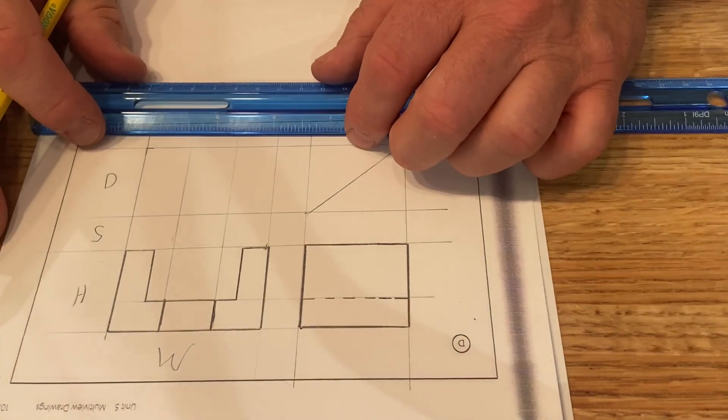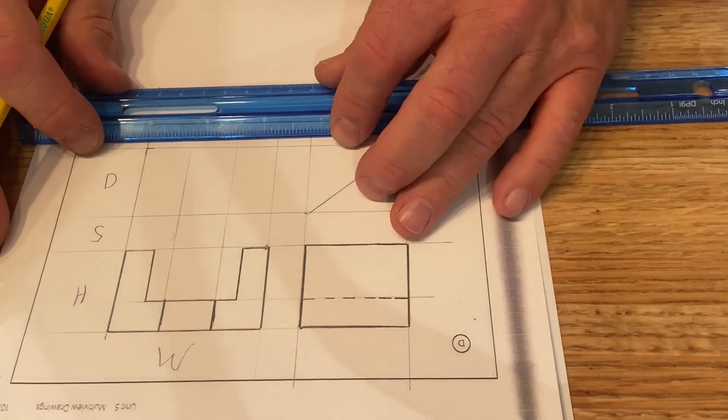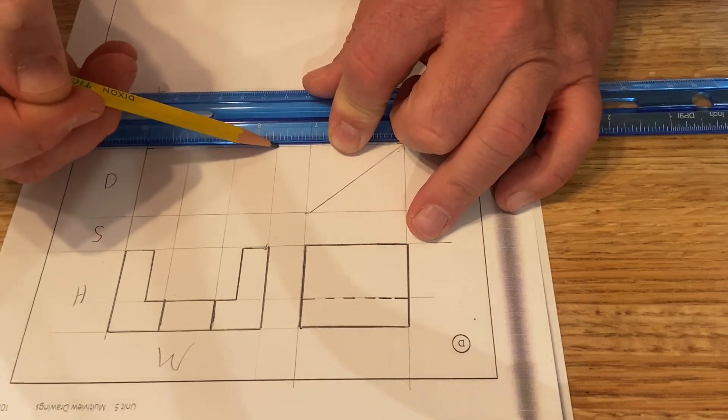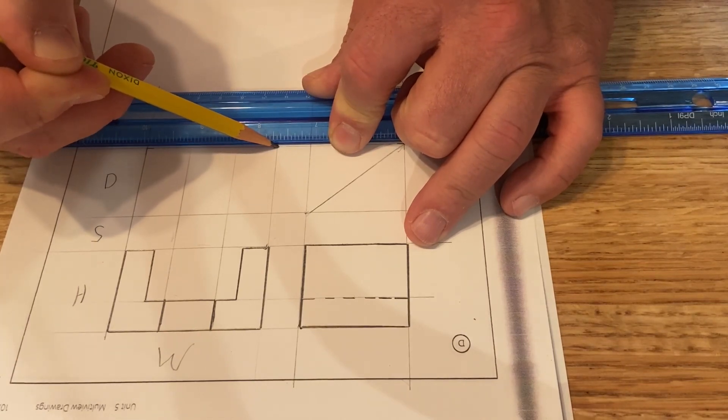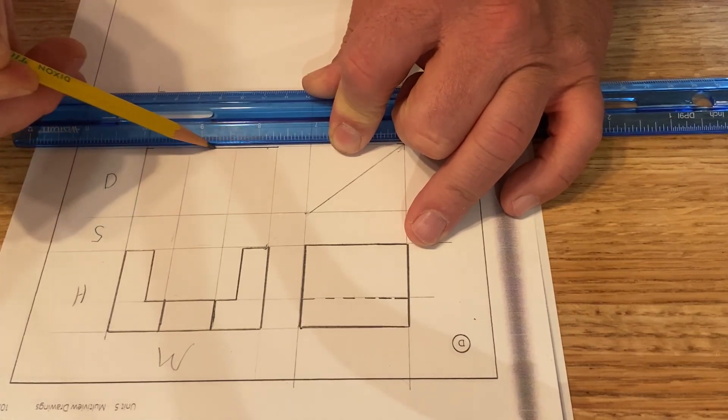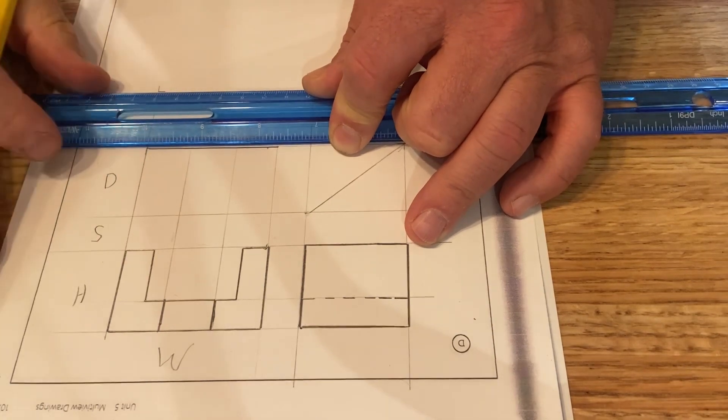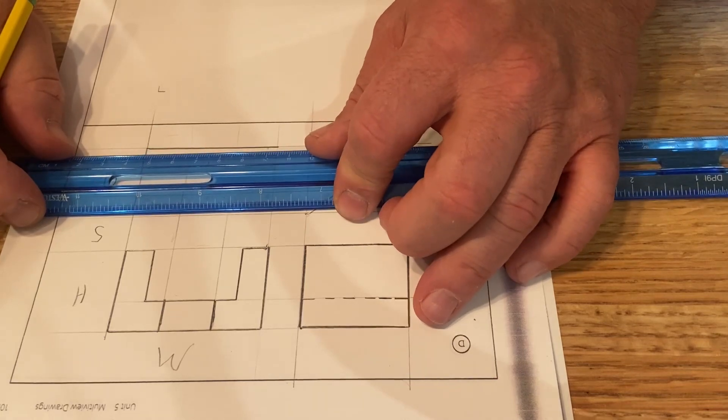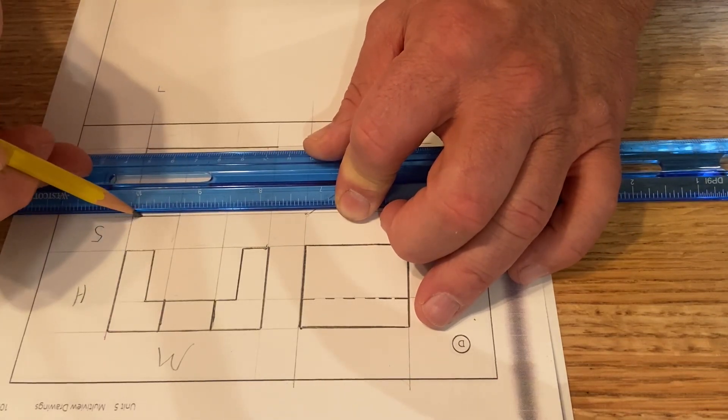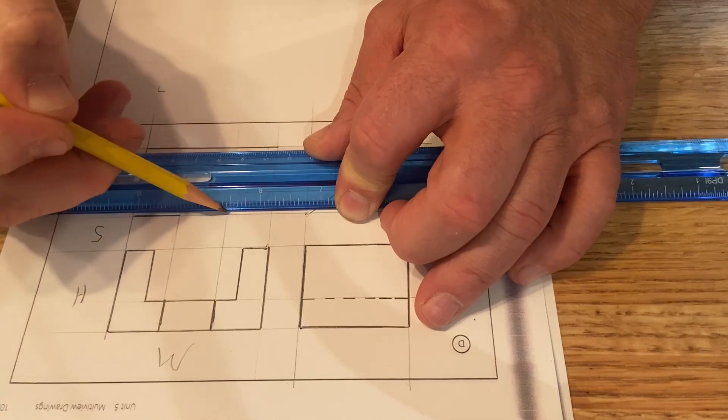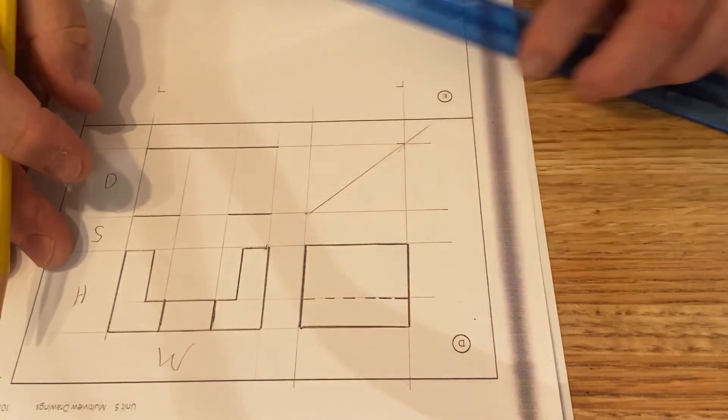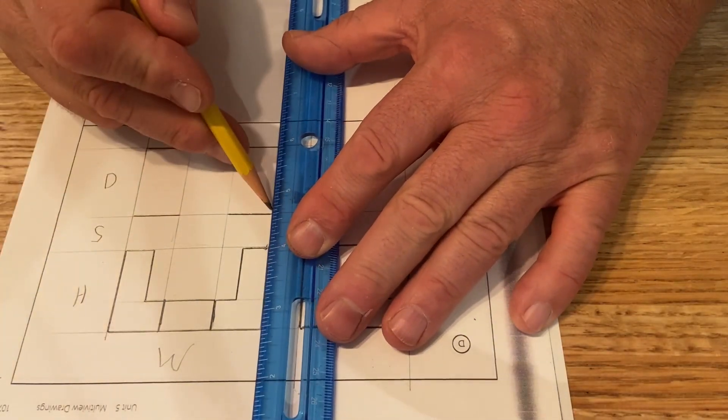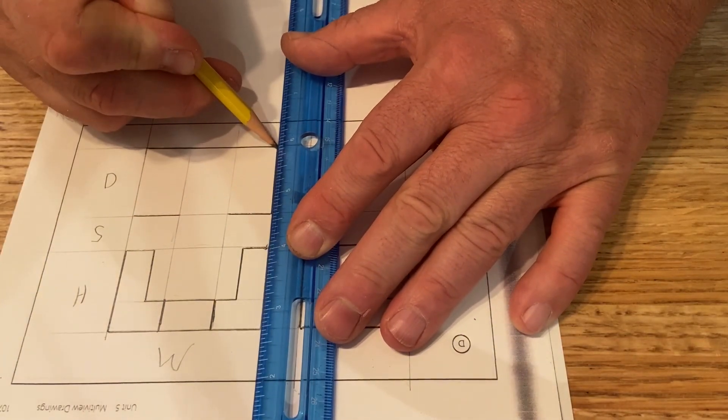So, and again, the top view is going to be a little bit more challenging. So we can kind of see here that it's going to be solid back in through here. And we know that it's notched out right here. So we're going to be solid object visible lines right here and right here. And of course our ends here will also be solid object lines.